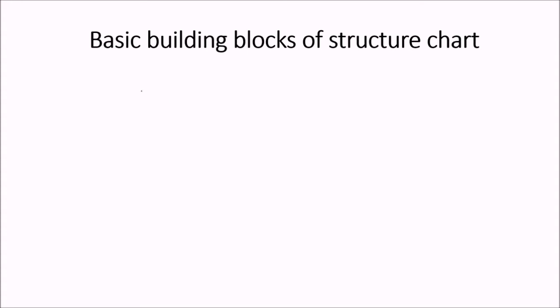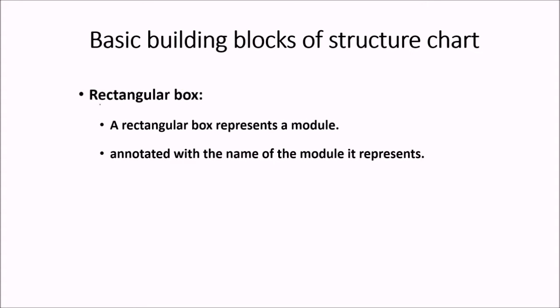We will see the basic building blocks of structure chart now. Rectangular box. What it suggests in terms of structure chart. A rectangular box is nothing but a module. And this is annotated or written with the name of the module it is going to represent. Like this process order.